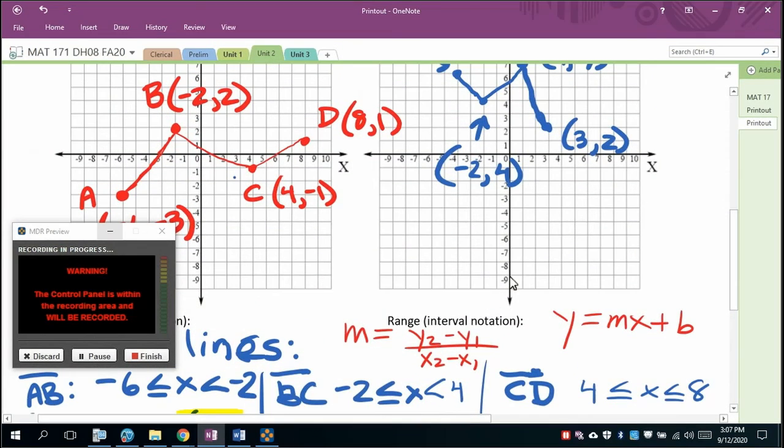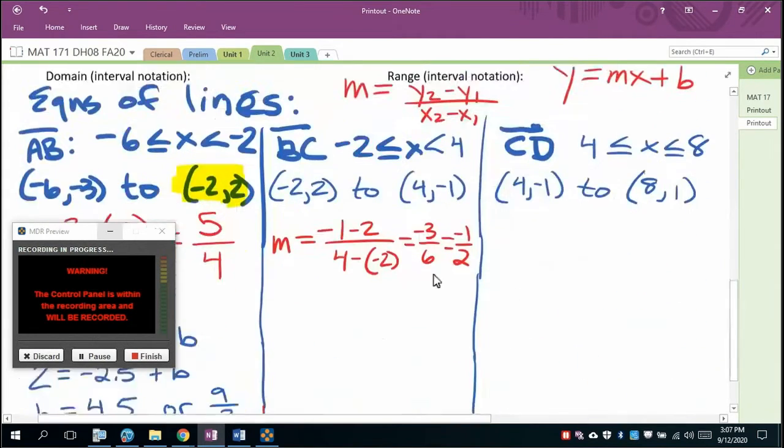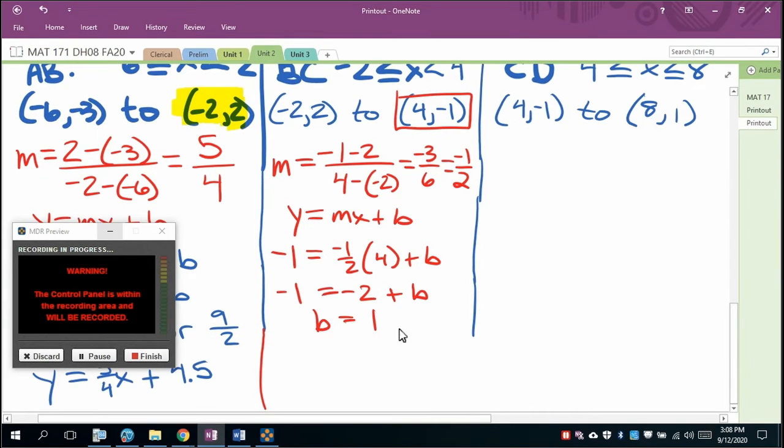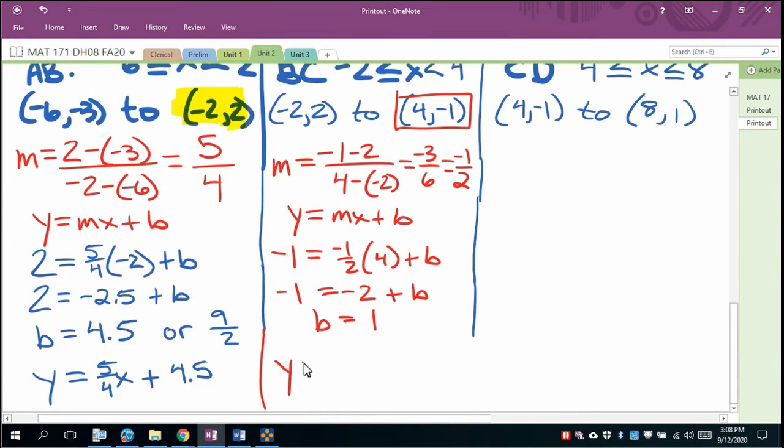And as you can tell, down 1 and over 2, down 1 and over 2, down 1 and over 2. In fact, this line was drawn somewhat improperly. We can already see what the y-intercept is going to be, which is going to be 1. But we're going to solve it anyway. So using y equals mx plus b, we'll have negative 1 equal to negative 1 half times 4 plus b. So negative 1 will equal negative 2 plus b, b will equal positive 1. So the equation of the line containing these points is y equal to negative 1 half x plus 1.